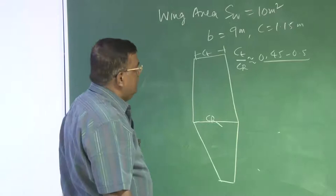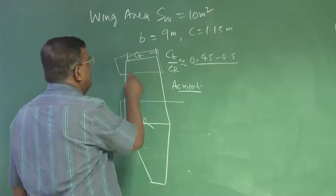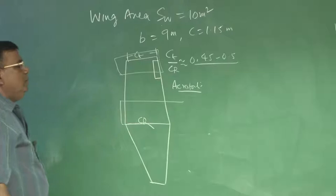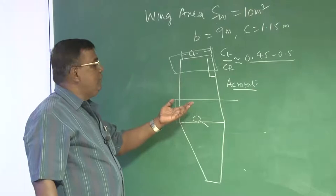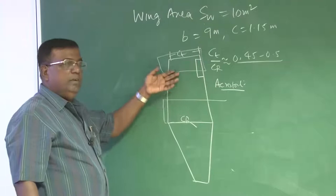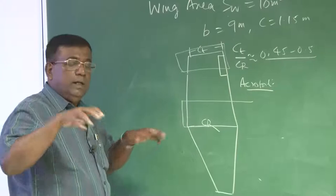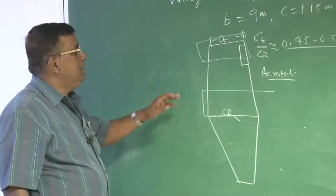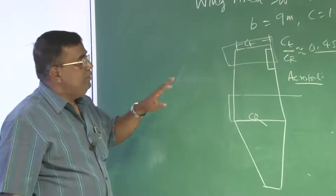The second task involves aerofoil selection. You may like to keep different aerofoils at the root and tip, because your aileron is at the tip and you do not want that region to stall without warning. Indirectly, you want the tip portion to stall later than the root. So you use aerofoils with different T by C or different camber. Sometimes you may also give geometric twist — a little bit of negative angle at the tip — so that when the root stalls, the tip does not, keeping your aileron effective.